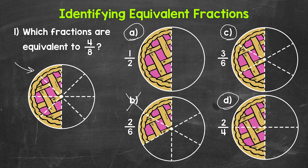4 eighths, 1 half, 3 sixths, and 2 fourths are all equivalent fractions. They represent the same amount of the whole pie, the same part of the whole pie.